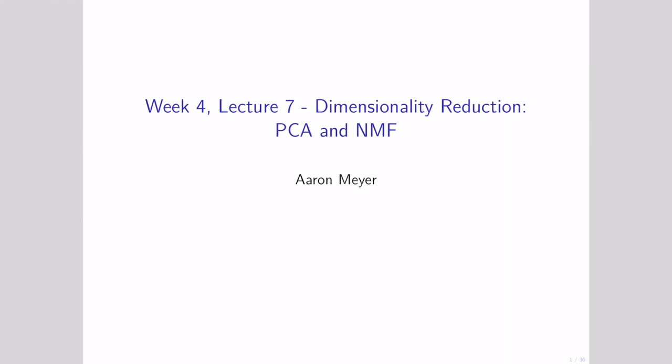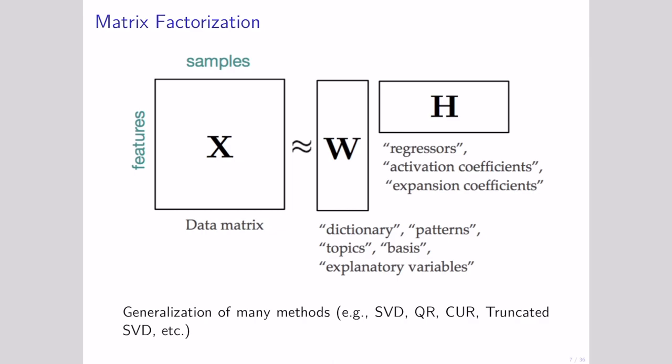You've now learned about principal components analysis, but there are a whole bunch of different ways that we can perform matrix factorization for data reduction. In matrix factorization, we take a large data matrix and factor it into two smaller matrices: W, which broadly explains the features of our dataset (the variables), and H, which broadly describes the samples and how those are related to each other. This separates variable-to-variable effects and sample-to-sample effects, as we saw with PCA.